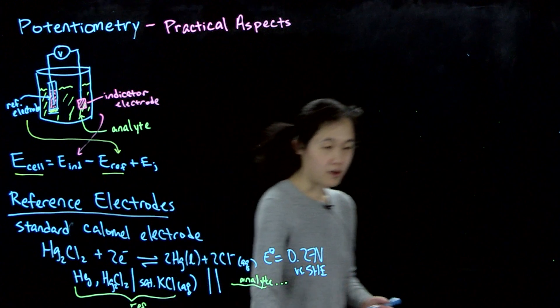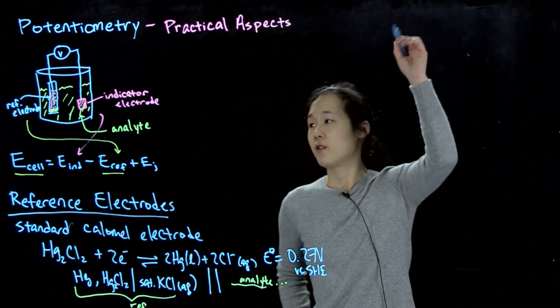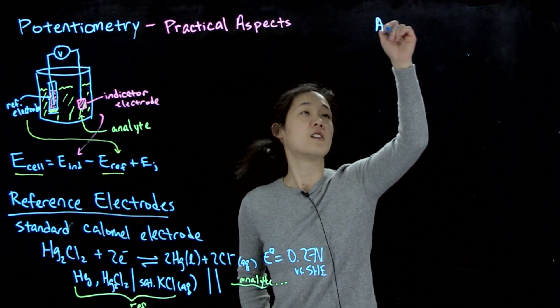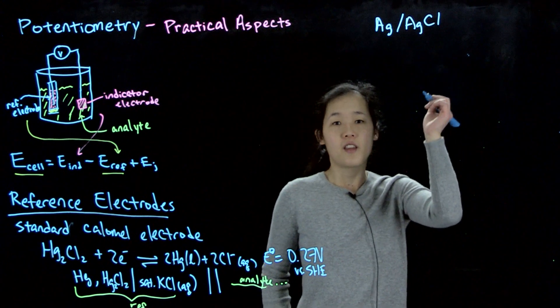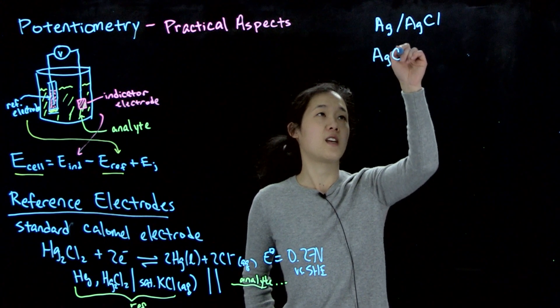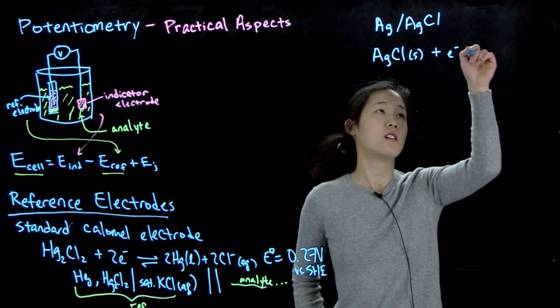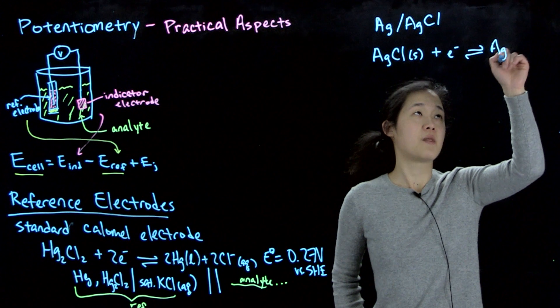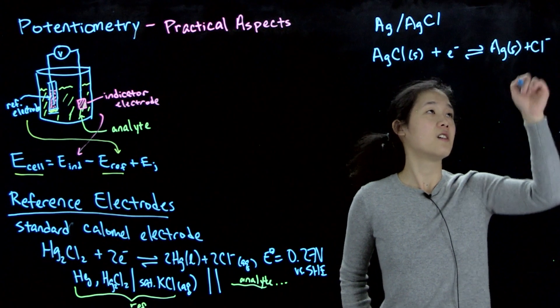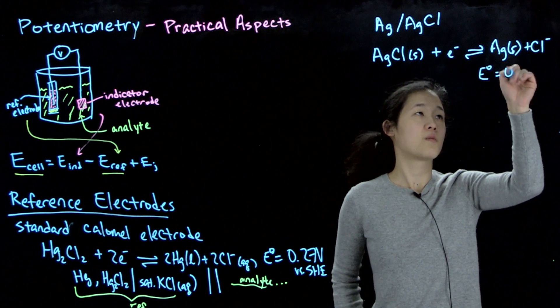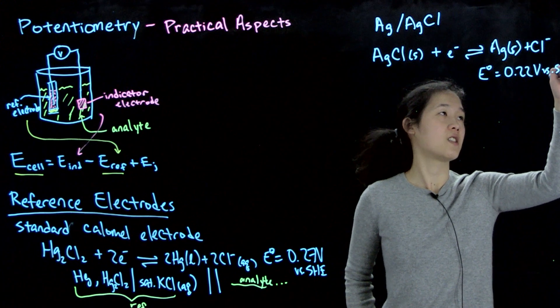Another common standard electrode, or reference electrode rather, is silver-silver chloride. So a silver-silver chloride electrode. And then this potential, or this half reaction, is if we take solid silver chloride and an electron, and then this goes to silver metal and then chloride ion.